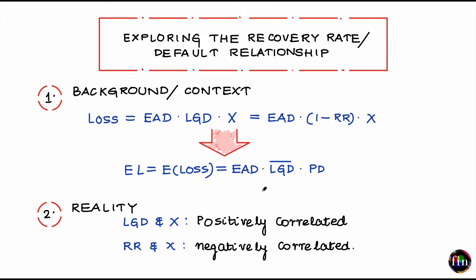This leads us to the well-known formula for expected loss: expected loss equals the product of the exposure times the mean expected value of the loss given default, times the probability of default. Now in reality, however, this assumption that LGD and X are independent is not true, and that is the focus of this video.